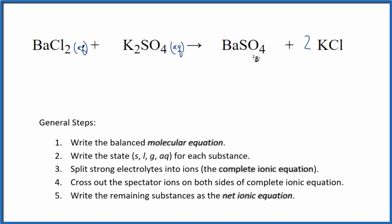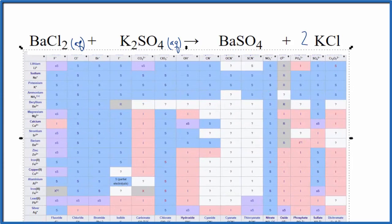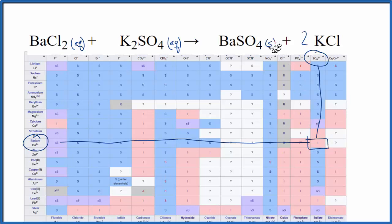Barium sulfate — sulfates are often soluble, but when we have elements in group 2, sometimes they're not. So let's check that on a solubility table. Here is our solubility table and we're going to look up barium sulfate. Barium is right here, and the sulfate SO₄ is right here. We're right here with this 'I' — I means that it's insoluble, it won't dissolve in water, so it's going to be a solid — a precipitate at the bottom of our test tube.